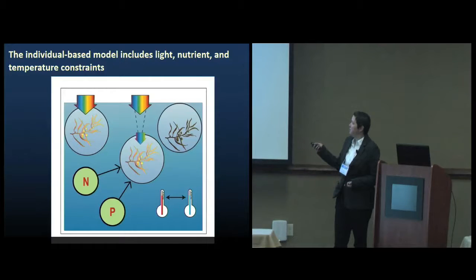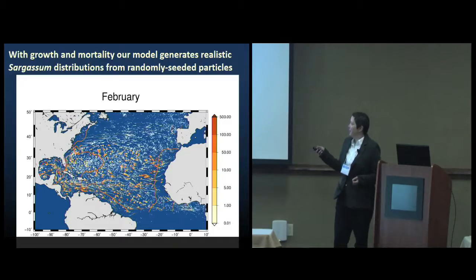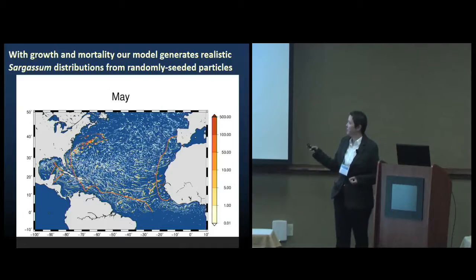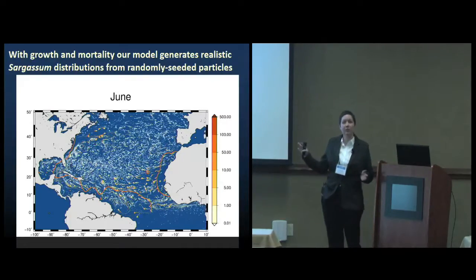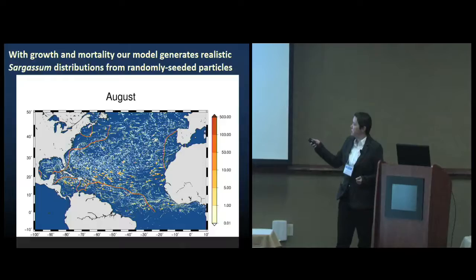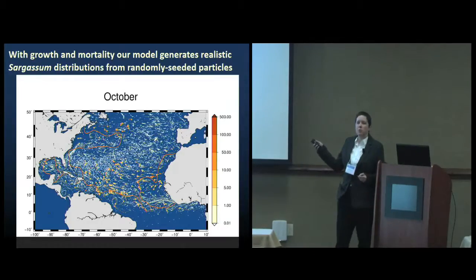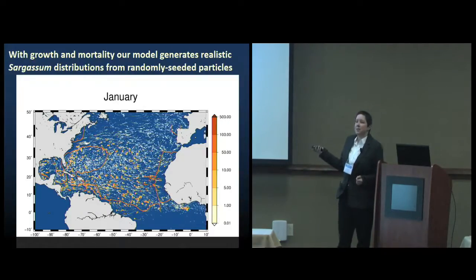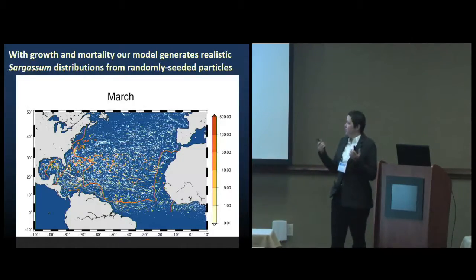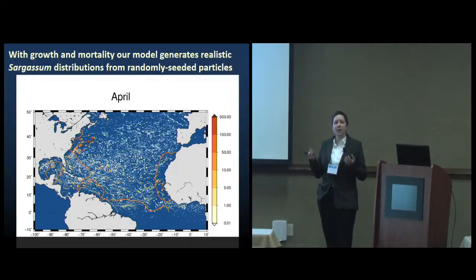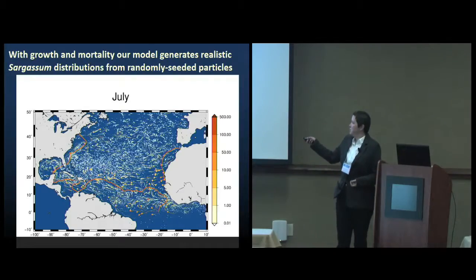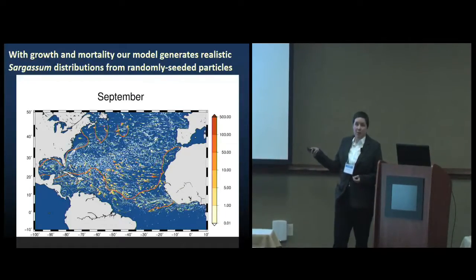When I apply this model to my random initial distribution, this is what I end up with. This is looking at an annual cycle of these particles, and I only have one year to look at here. The contours that I plotted here are contours from those satellite observations. We can see kind of qualitatively that I can actually increase the abundance of sargassum in the regions where we observe sargassum, and I'm also sort of killing off the sargassum in places where we're not observing it.